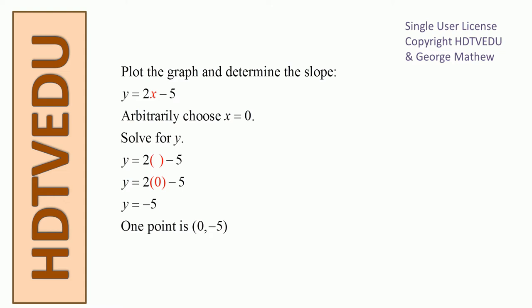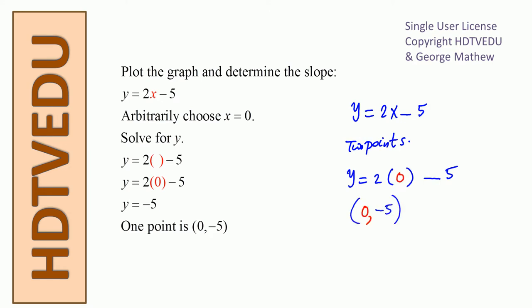So we are asked to plot the graph y is equal to x minus 5. To plot the graph, we need two points. We can get the first point by substituting x equals 0. In the space occupied by x, we put 0. So 0, negative 5 is a point on the line. We substitute x equals 0 and we get negative 5.